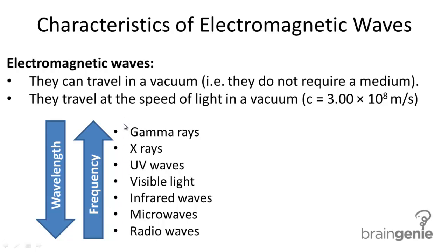Going down this list, starting from gamma rays, the wavelength decreases. Gamma rays have the shortest wavelength, whereas radio waves have the longest wavelength.